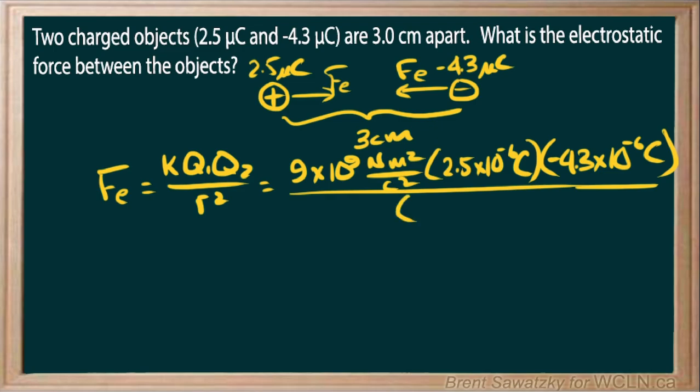On the bottom, we have to convert that to meters, so we would say 0.03 meters, and that's all squared. You've got it laid out, and plugging it into your calculator. I would use that EE button if you have it for all the times 10 to the situations there.